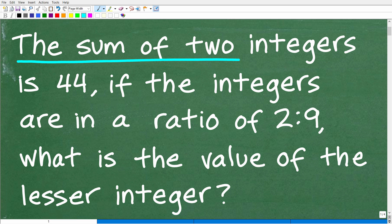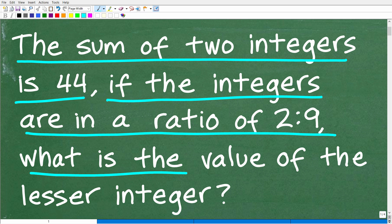The sum of two integers is 44. Now, if you forgot what an integer is, basically these are numbers in math like negative 2, negative 1, 0, 1, 2. We're not talking about decimals and fractions. So the sum of two integers is 44. If the integers are in a ratio of 2 to 9, what is the value of the lesser integer?